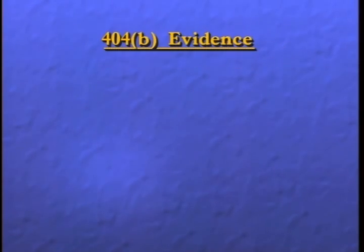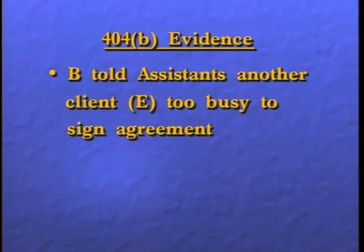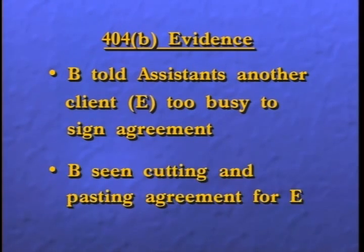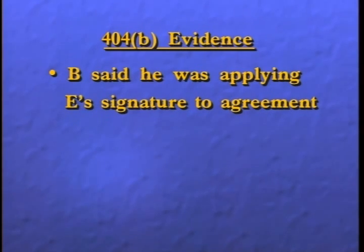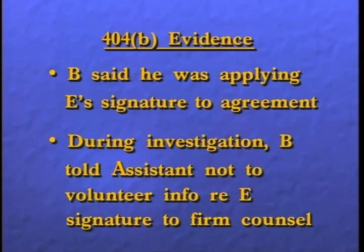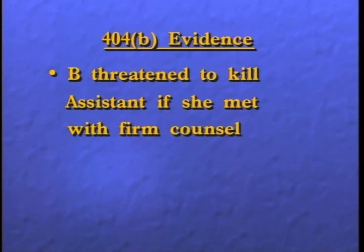The 404(b) evidence is that broker told two assistants that another client, executive E, was too busy to sign an agreement with the brokerage firm; that an assistant saw B cutting and pasting an agreement for E; that B said he was applying E's signature to the agreement and had done this before; that when the firm began an internal investigation, B told an assistant not to volunteer information to the firm's counsel; and finally, that B threatened to kill the assistant if he found she had met secretly with the firm's counsel.